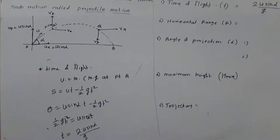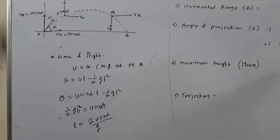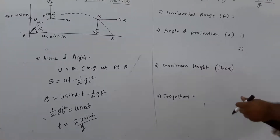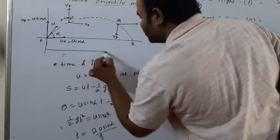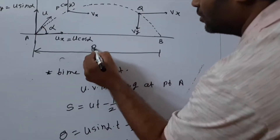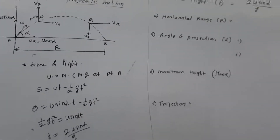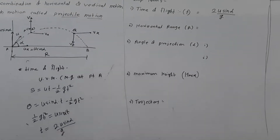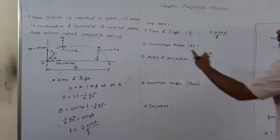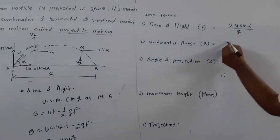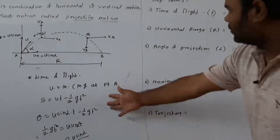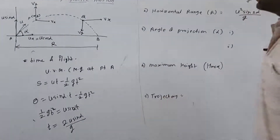Similarly, we can find the horizontal range. Horizontal range is the maximum horizontal distance covered by the particle during projectile motion, denoted by R. The standard equation to calculate horizontal range is R = U² sin 2alpha / g, which can be derived using a small derivation.